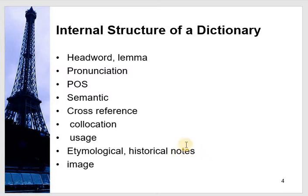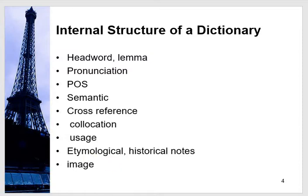Etymological or historical notes are also given with some words. For example, with the word 'holocaust,' its historical relationship is mentioned. Images are also given sometimes within the dictionary entry, and sometimes in a separate section at the end of the dictionary.